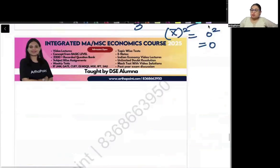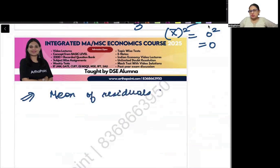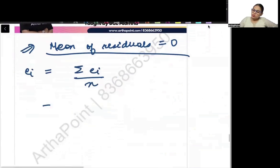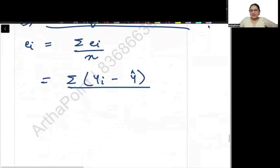And we know this property that the mean of the residuals is actually 0. This is a known property. What is the mean of residual? Mean of residual is summation of residual divided by N. What are residuals? It is the difference between actual and predicted value of Y divided by N.